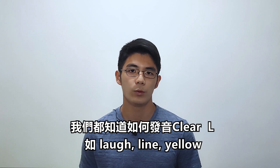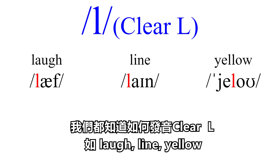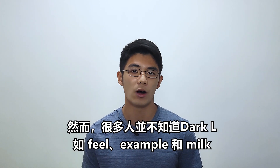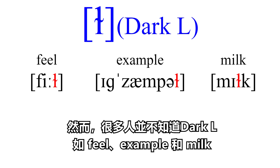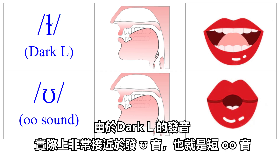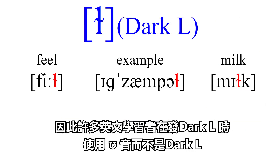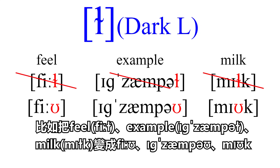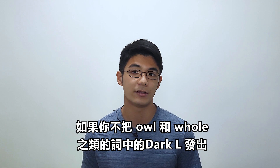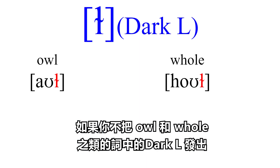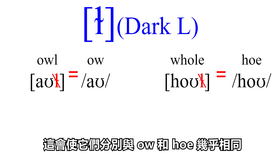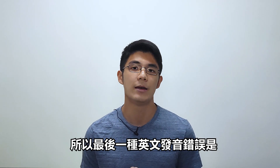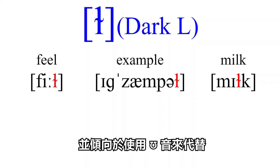Now to the last one. We all know how to pronounce the clear L, as in laugh, line, and yellow. However, many people aren't aware of the dark L, as in feel, example, and milk. Due to the fact that the way of pronouncing the dark L is actually very close to pronouncing the U sound, aka the short oo sound, many English learners use the U sound instead of the dark L. For example, making words such as feel, example, and milk become feel, example, milk. And if you don't pronounce the dark L in words like owl and hole, it makes them almost identical to ow and hoe, respectively. So, the last type of English pronunciation mistake is that people aren't aware of the dark L and tend to use the U sound instead.